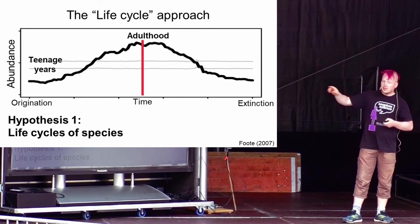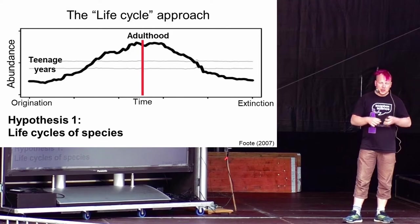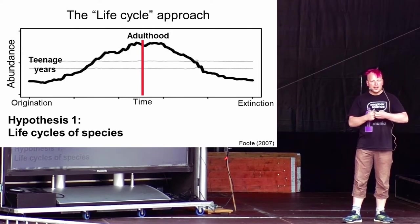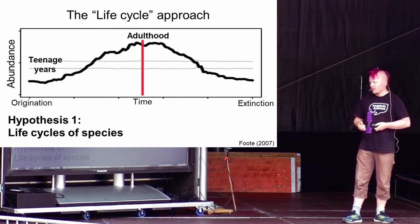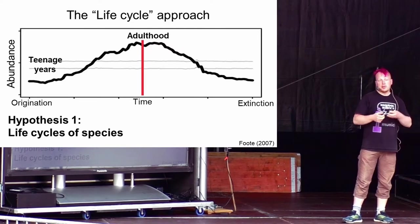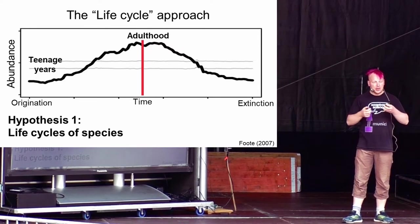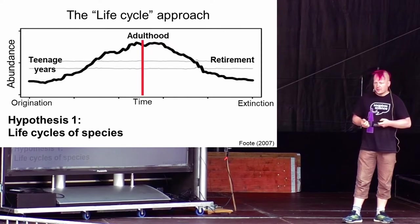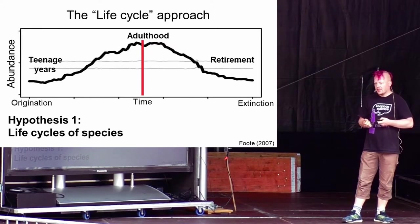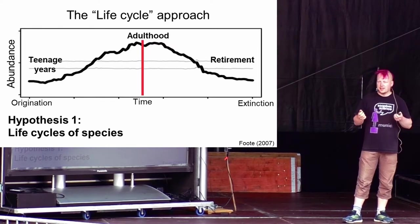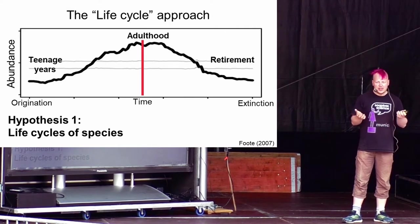A common hypothesis is that this pattern actually reflects the life cycle of a species. Just like humans have a life cycle, species also have a life cycle. Starting with the teenage years, close to the origination, where the species is young and dynamic, so it will spread out, become very abundant. Then the adulthood, where it will become very established and very abundant. And then it will slowly approach retirement. There will be less and less of that species until it is going extinct. It's pretty much like humans.